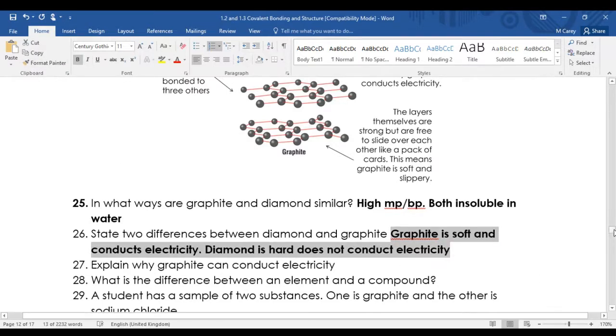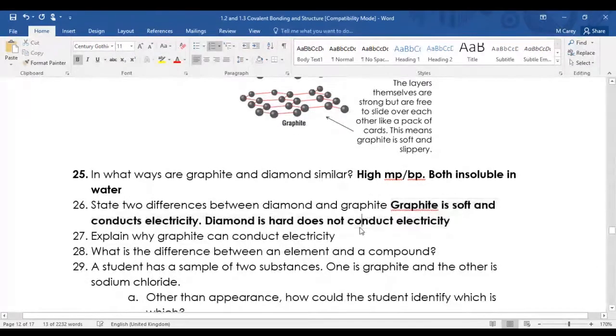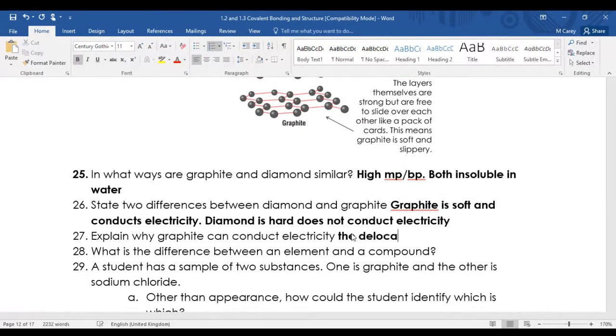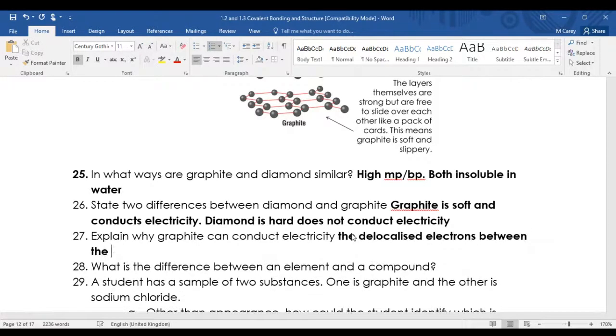Explain why graphite can conduct electricity. The delocalized electrons between the layers of carbon hexagonal rings can move and carry charge. Always give as much detail as you can.